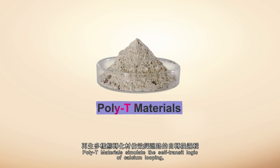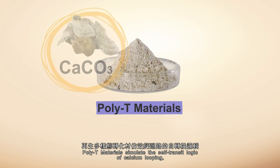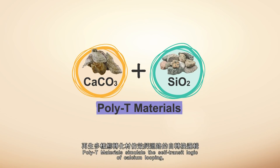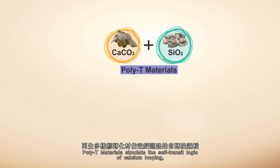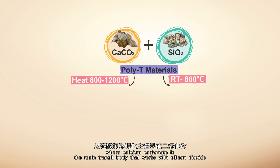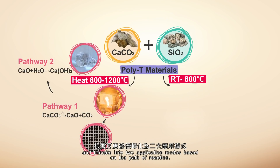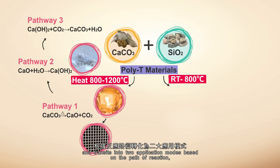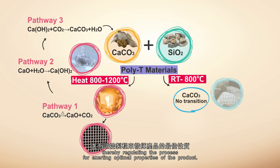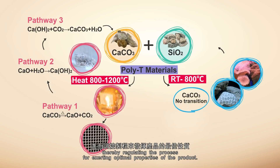Poly-T materials simulate the self-transit logic of calcium looping, where calcium carbonate (CaCO₃) is the main transit body that works with silicon dioxide (SiO₂) and transits into two application modes based on the path of reaction, thereby regulating the process for exerting optimal properties of the product.